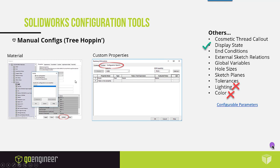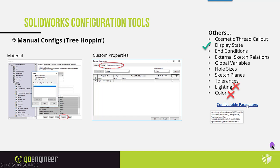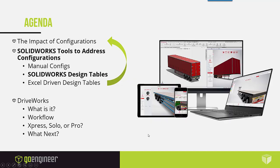Beyond dimensions and features, you can also configure material, custom properties, and many other parameters. I've listed what can and cannot be configured on this slide, and there's a link to the SOLIDWORKS help document for configurable parameters if you want a complete reference.